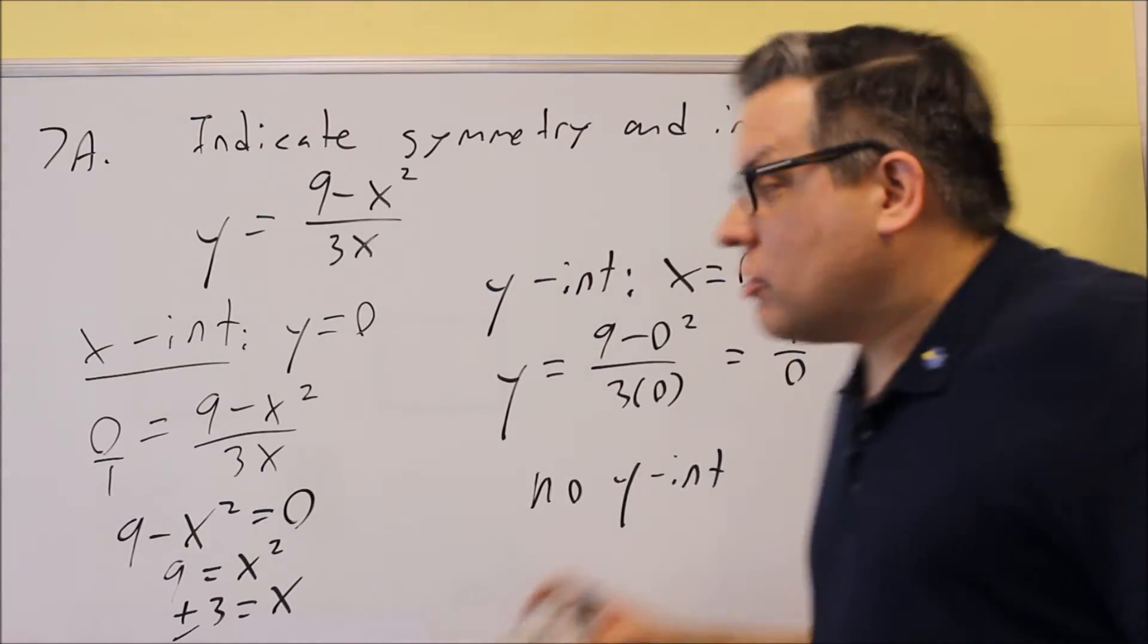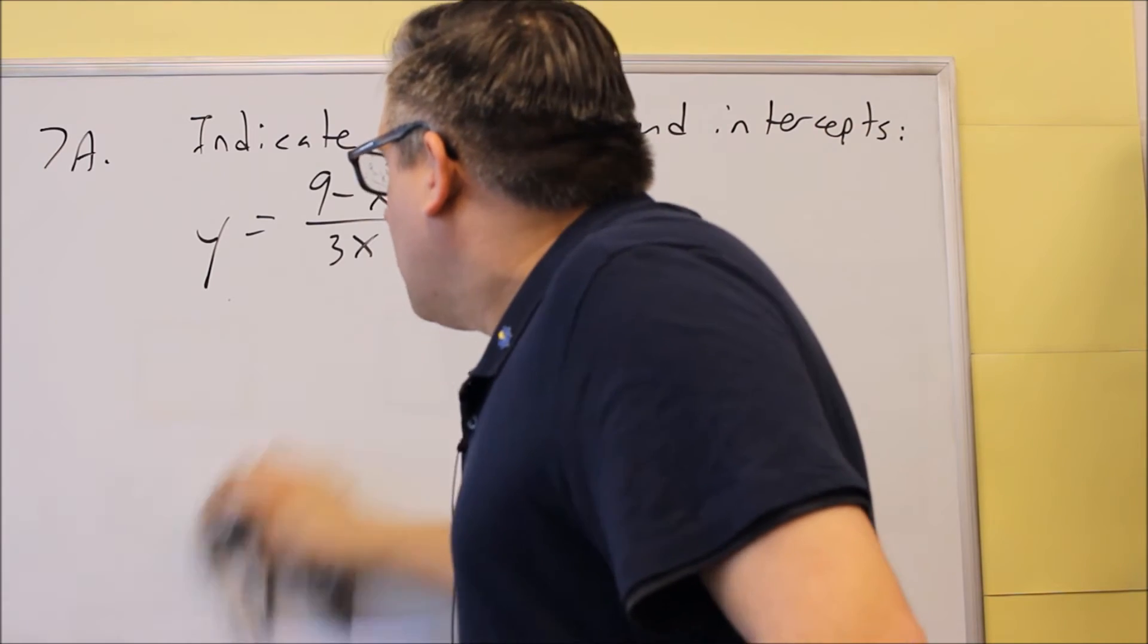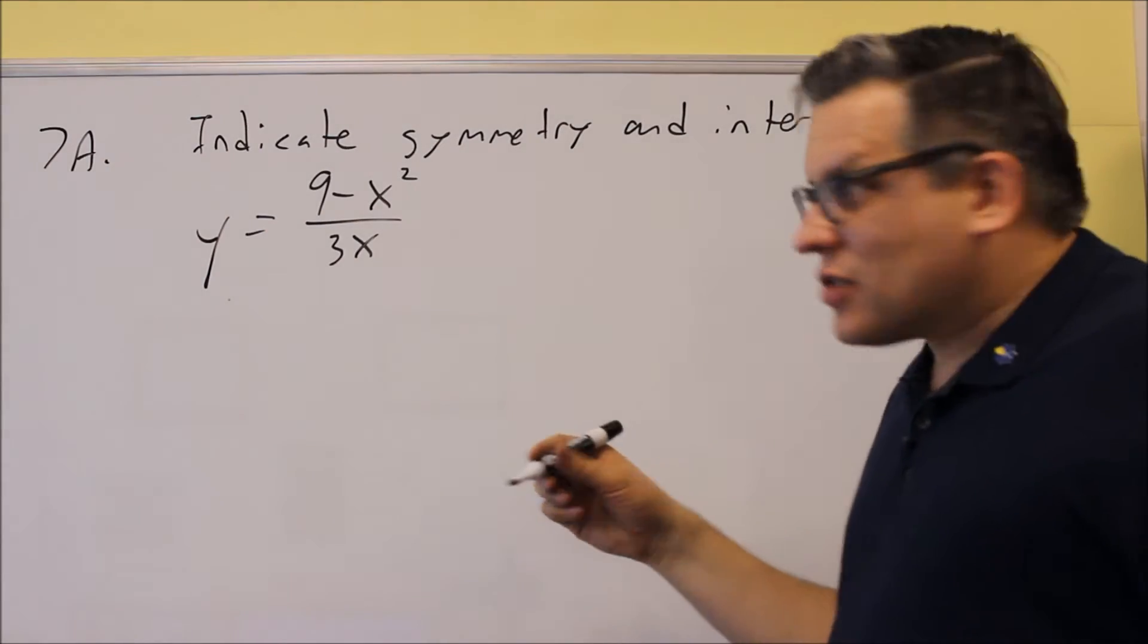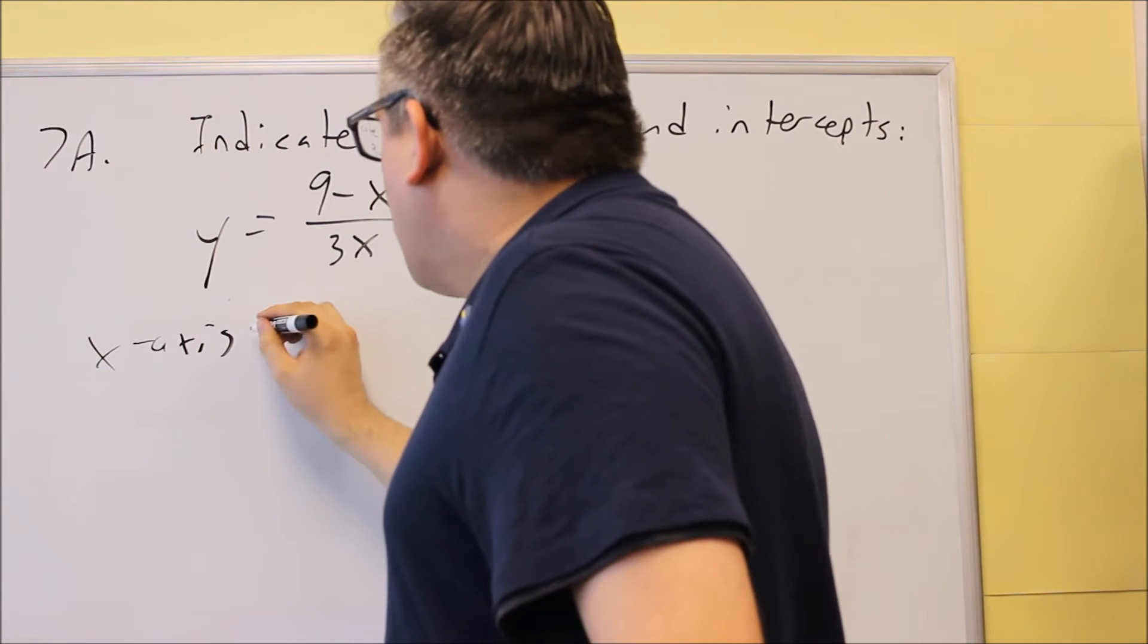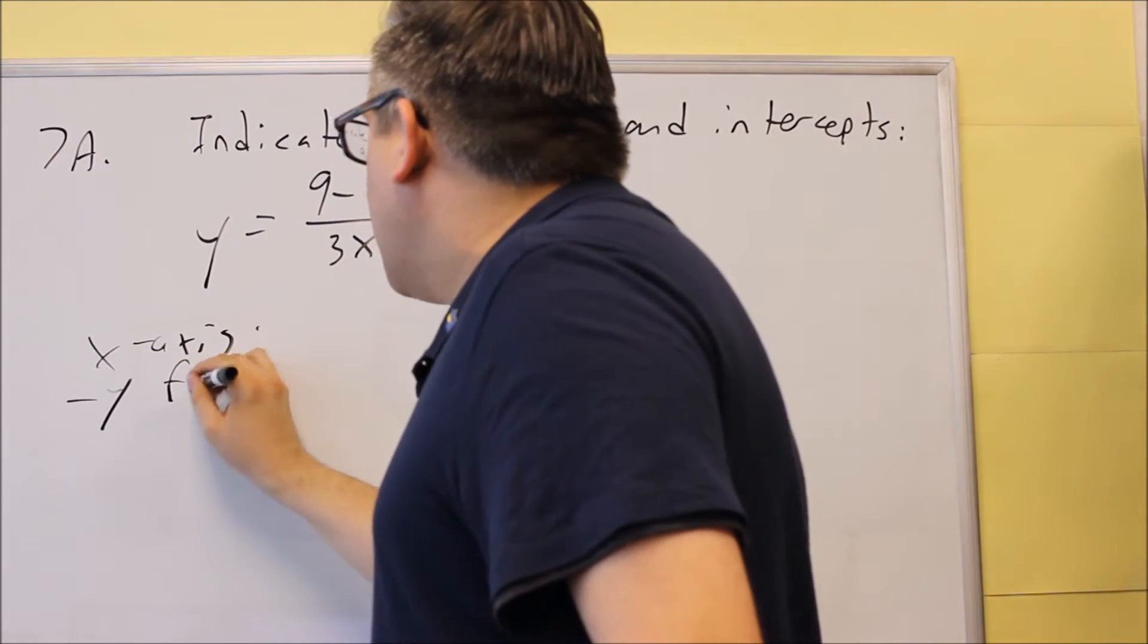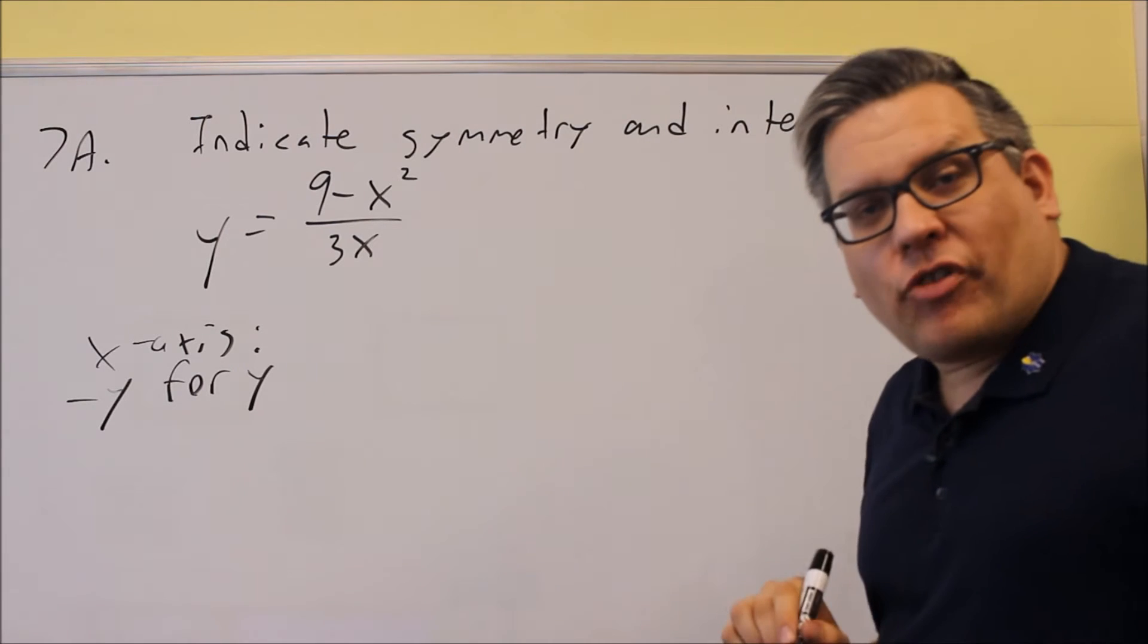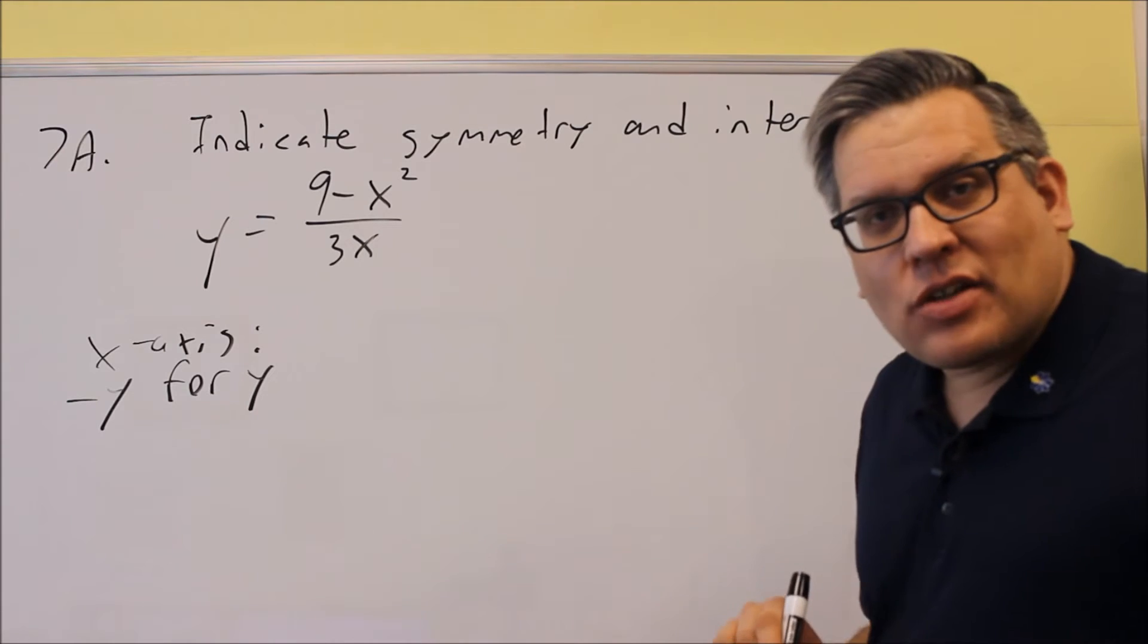Now the second thing you want to do is find symmetry. Now in the lectures, we talked about there's actually a different test for that. So for instance, x-axis symmetry, if you want to find x-axis symmetry, then it's negative y. You replace the y with negative y. You're going to simplify it, if you get exactly the same equation you started with, then it has that symmetry.